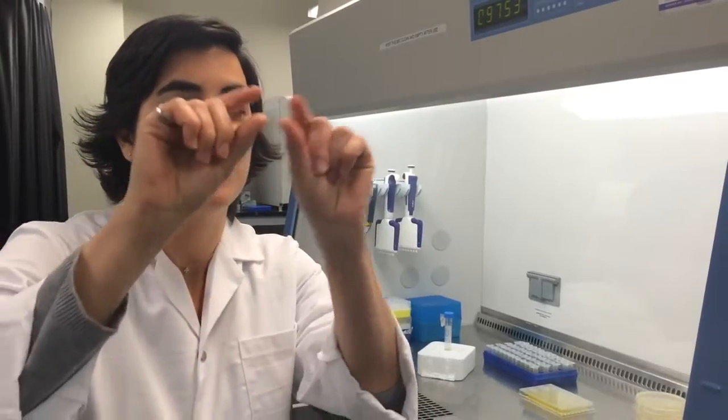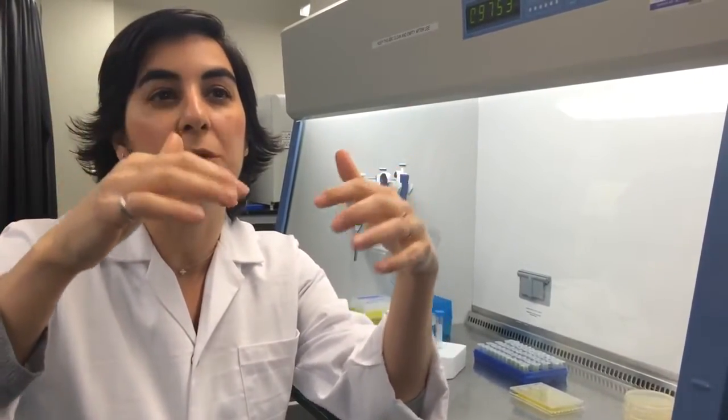Bacteria have this skin around them that protects them called a membrane. When we expose bacteria to this maple syrup extract, it actually makes the skin more permeable to the antibiotic, so the antibiotic can permeate through the skin.